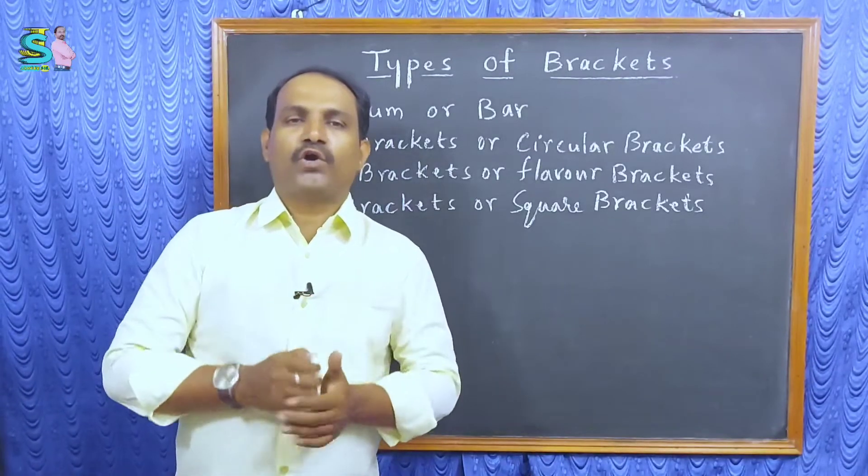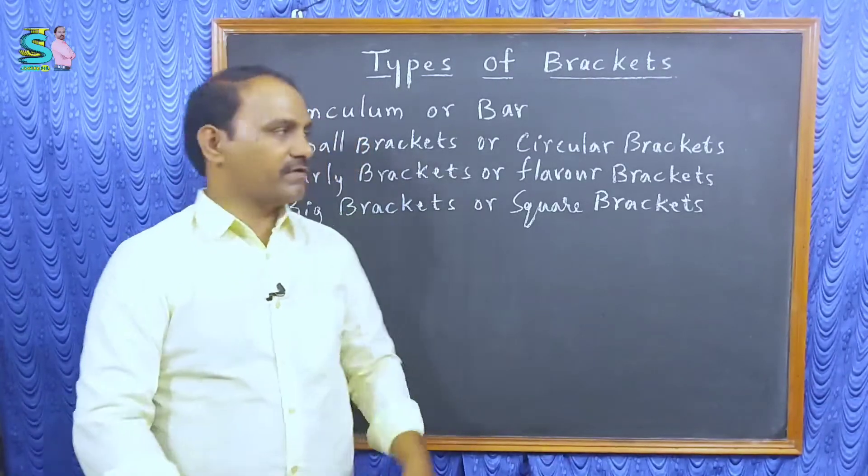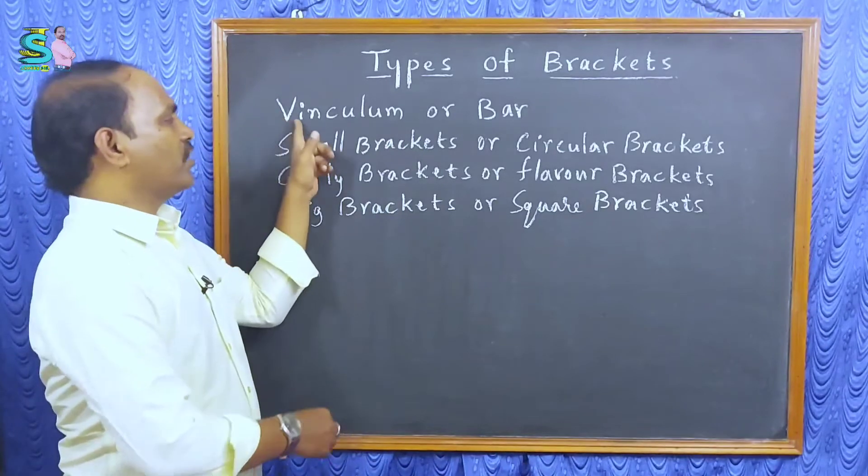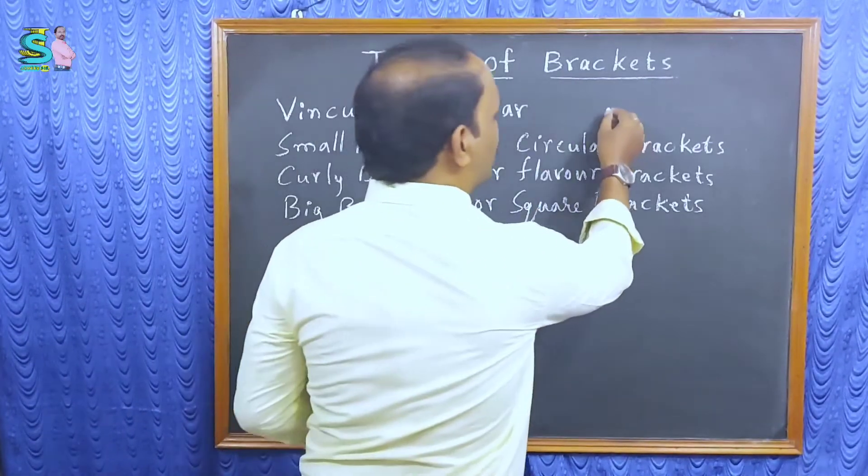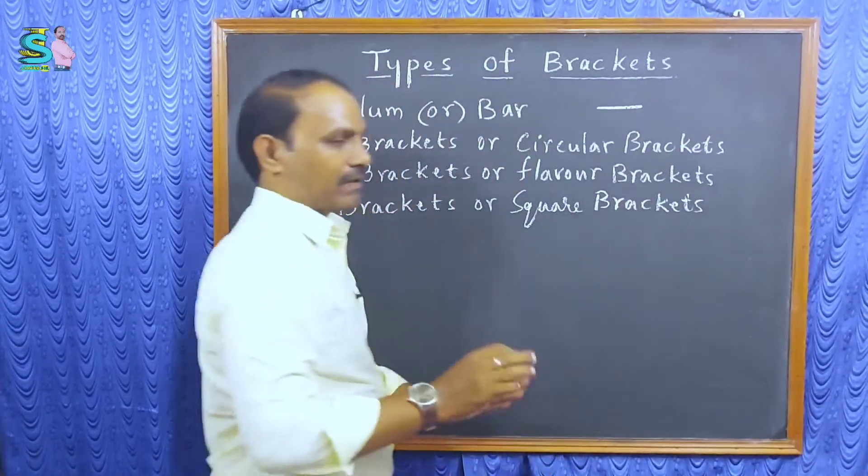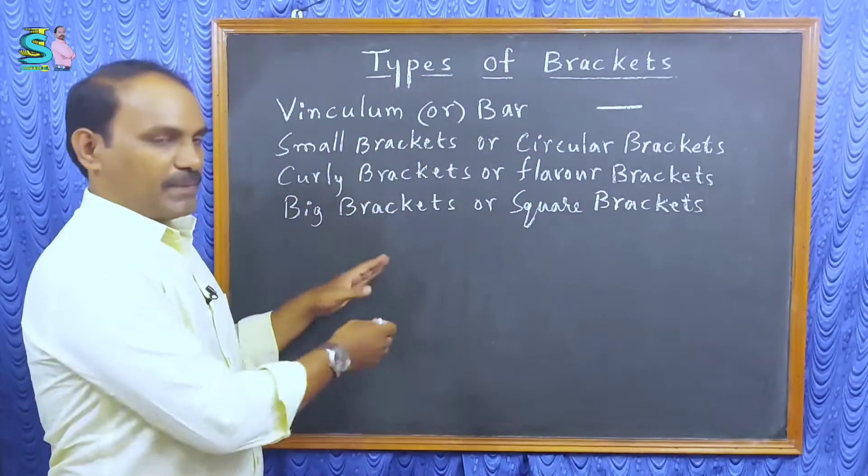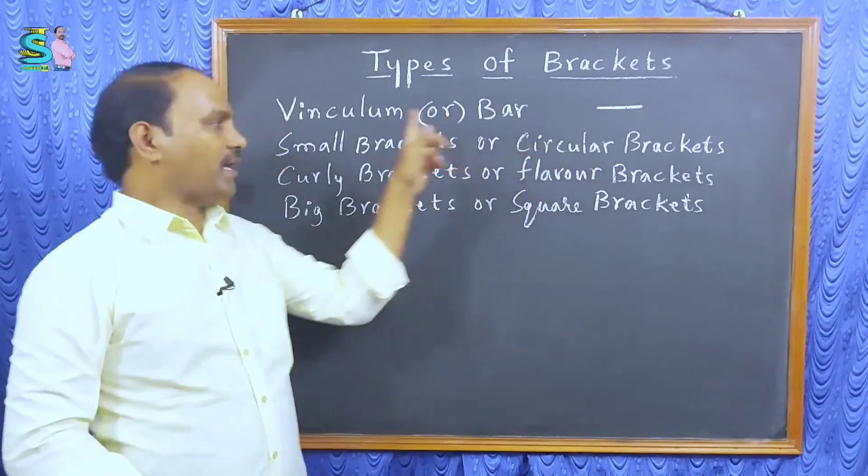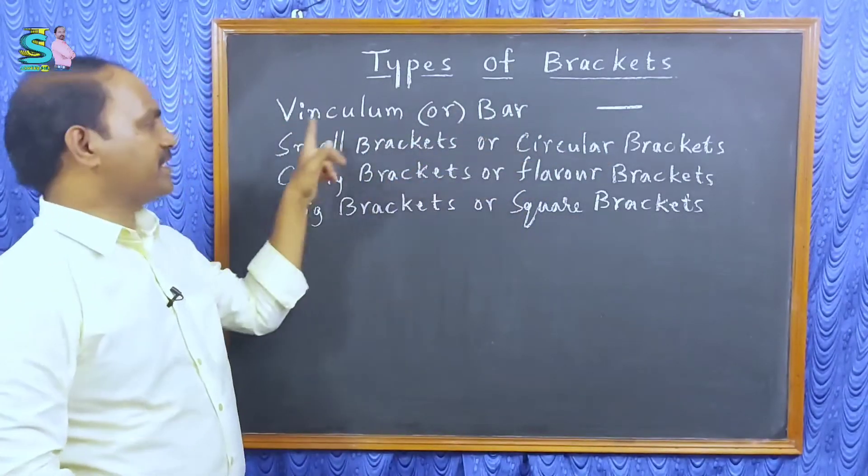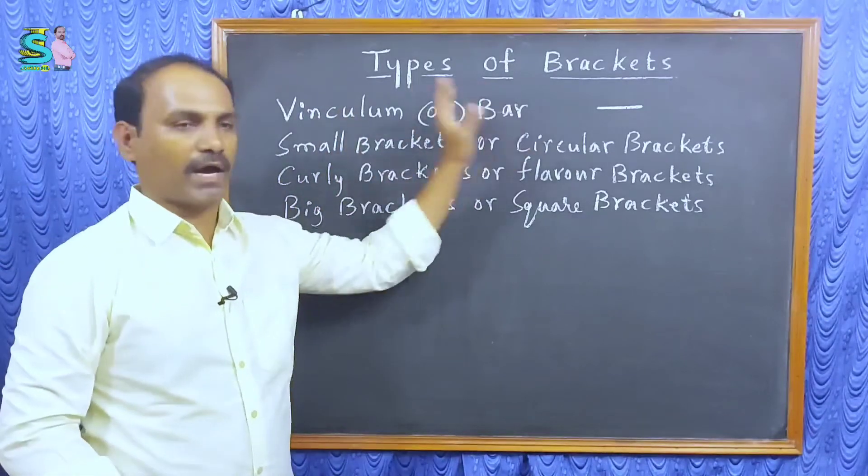Here four type of brackets are there. First bracket is called vinculum or bar. How it is looking like? Only bar. I will explain in the example. It is bar only or that bracket name is vinculum or bar.